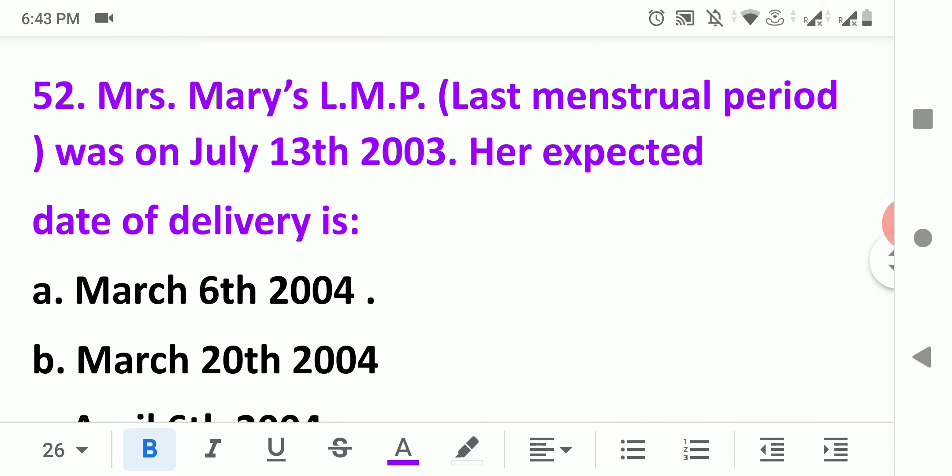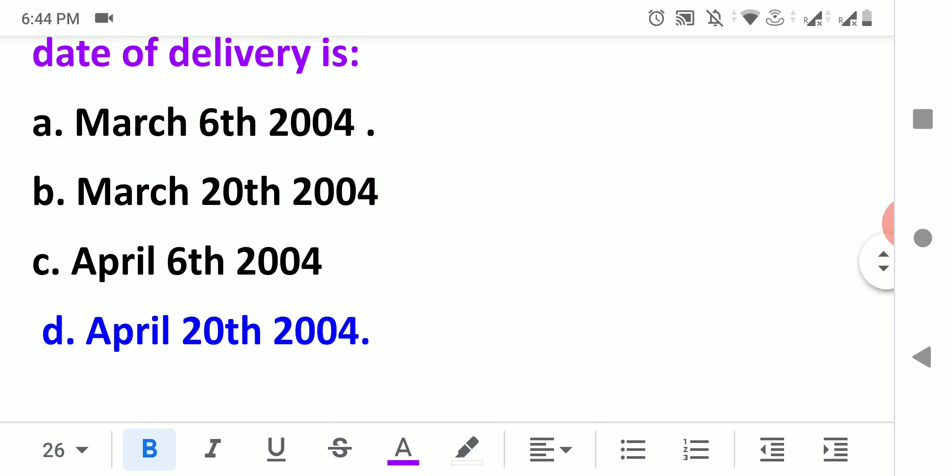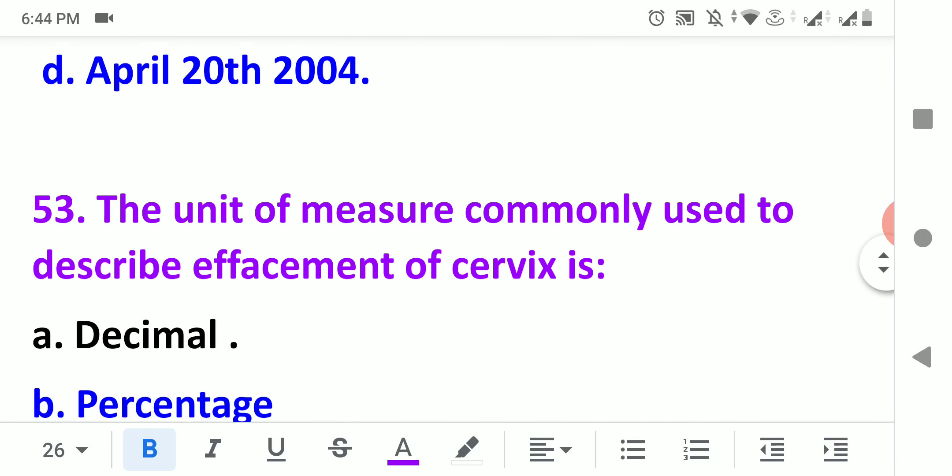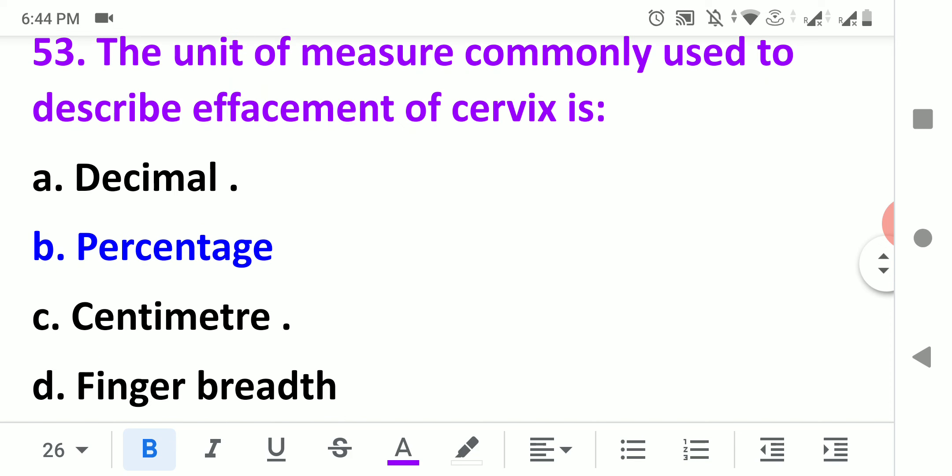If someone's LMP is 30 July 2013, then the expected date of delivery: you add 7 days, so you get 6 August. Now leave July and count 9 months back: August, September, October, November, December, January, February, March, April. So 6 April 2014 is the right answer.